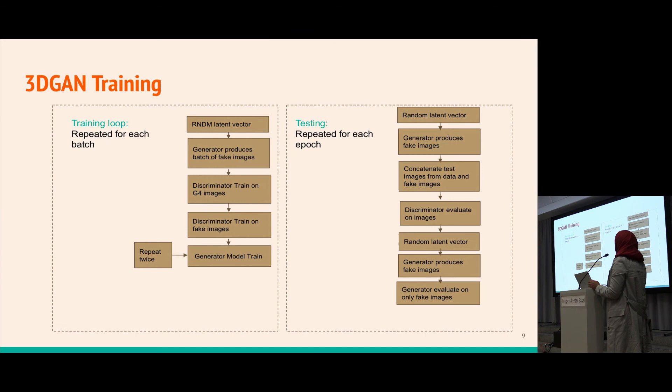Training is very time consuming because it's not conventional training. We first produce fake images, then train the discriminator on fake images and on Geant4 images. To balance, we train the generator twice. Similarly in our testing loop we generate fake images and evaluate the discriminator and find the generator loss.